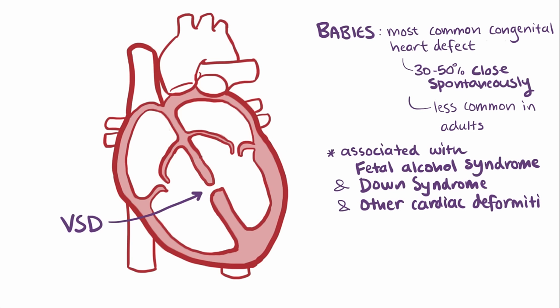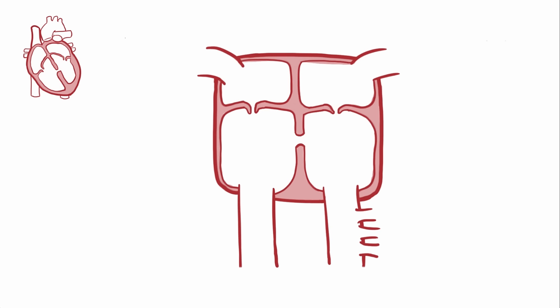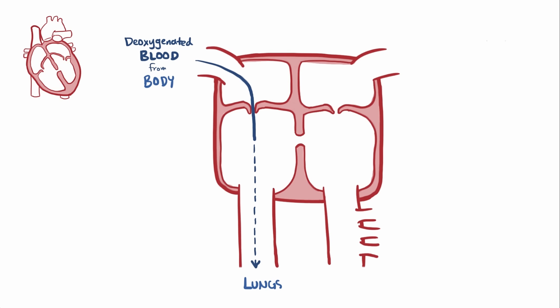Now let's check out what happens with blood flow with this opening between the two ventricles. Using a simplified heart diagram: deoxygenated blood comes from the body to the right atrium, and then flows down into the right ventricle, where it can either be pumped out to the lungs as normal, or pop over to the left ventricle.